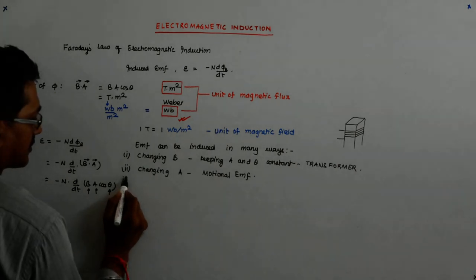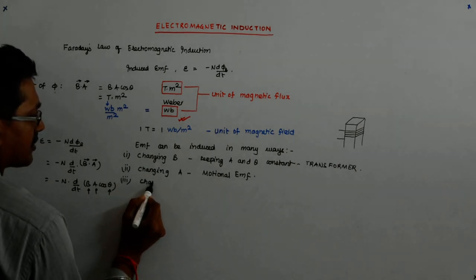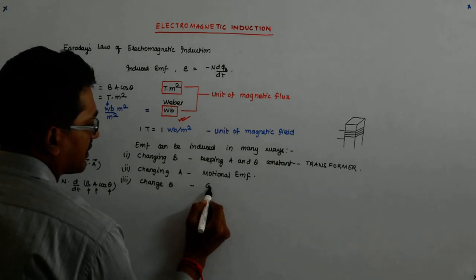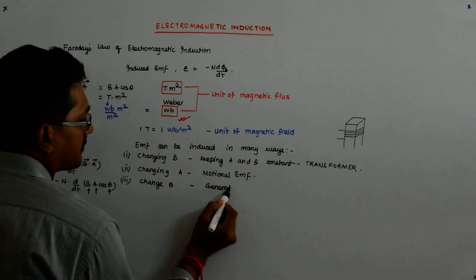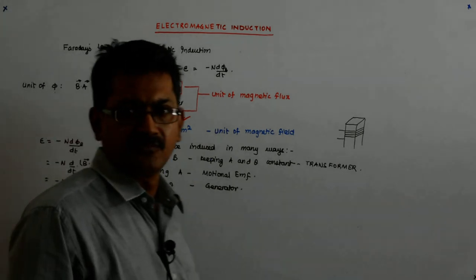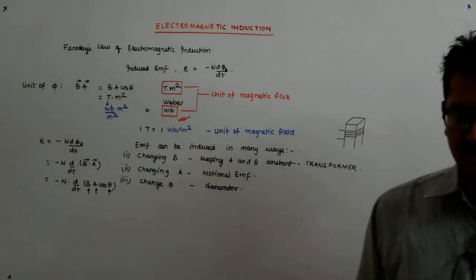Third, you change theta. What do we get? Generator. This is what Tesla did. And we will study all three of them.